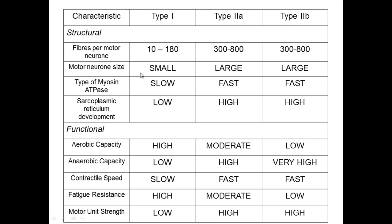If you look at the type 1 muscle fibers and their functional properties — a high aerobic capacity and high fatigue resistance — that makes them better suited to longer distance endurance events. Comparing that to type 2a and type 2b, specifically type 2b, those have a very low aerobic capacity but very quick contractile speed and very high anaerobic capacity, making them best suited for sprinting events like the 100 meters and weight lifting.